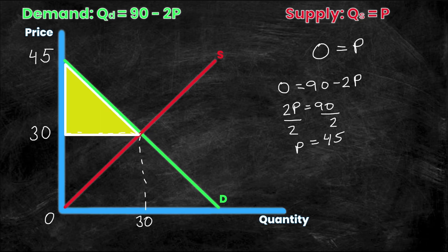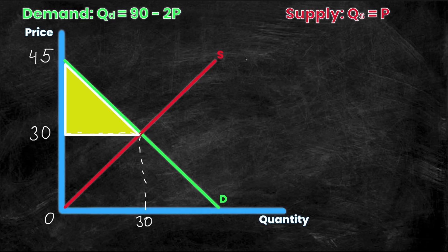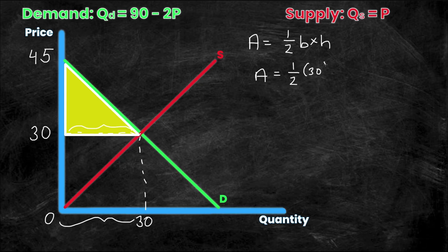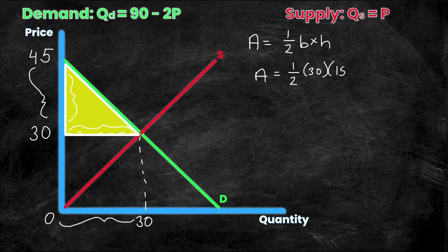Now I'm trying to calculate the area of the consumer surplus triangle, using the formula: area of a triangle equals one half times base times height. The base runs from zero to 30 on the quantity axis, so the base equals 30. The height is the vertical distance from the equilibrium price of 30 up to the demand intercept of 45 — that's a difference of 15. So the height of my triangle is 15.